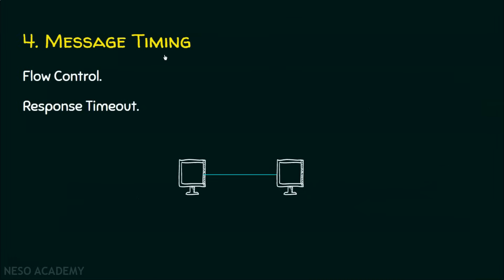Message timing is the fourth element of protocols, and it deals with flow control and response timeout. For flow control: if the sender is very fast and the receiver is slow, the sender can send data at high speed but the receiver can't handle that speed. If there is no flow control mechanism, the entire communication will become useless. It is the responsibility of the protocol to provide flow control. At the same time, the sender sends data and the receiver has to acknowledge it. If the acknowledgement is not received, the sender waits for a certain period of time, and after the expiry of that time, the sender retransmits the data to ensure guaranteed delivery. It is the responsibility of the protocol to tell how much time the sender should wait for an acknowledgement.